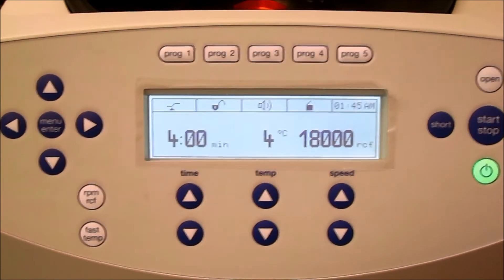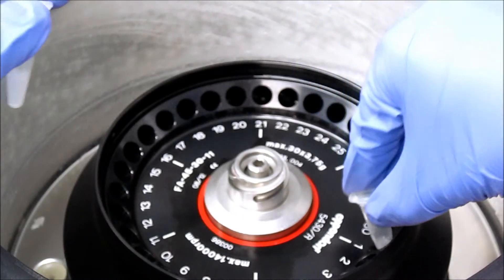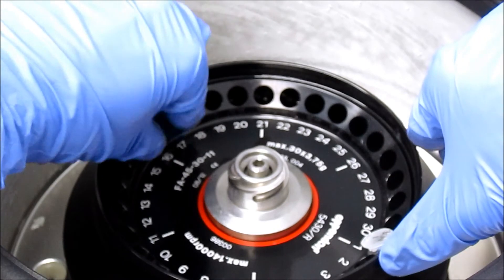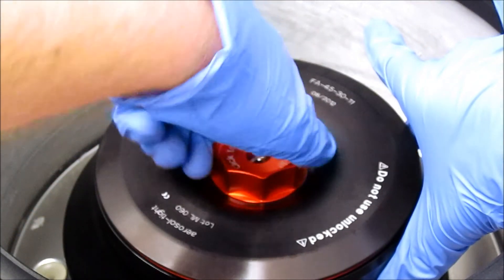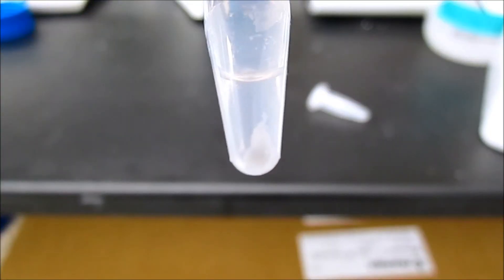After incubation, each sample is centrifuged for 4 minutes at 18,000 G at 4 degrees Celsius. This separates the liposomes from the solution due to their density and causes them to form the pellet seen at the bottom of the tube.